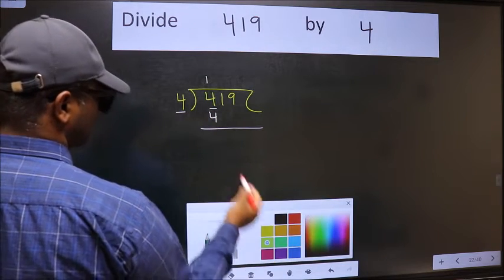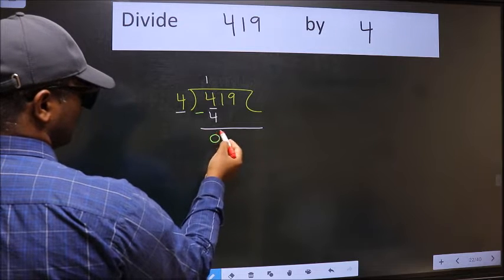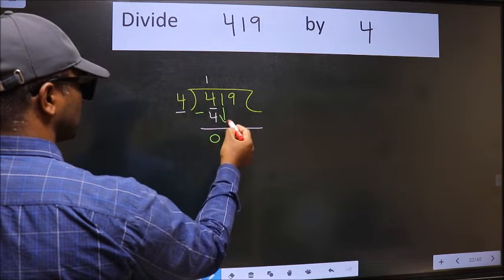Now we should subtract. We get 0. After this, bring down the number beside it.